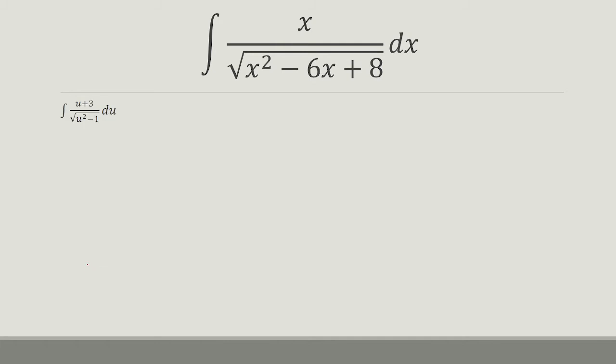Now at this step, we can do a trig substitution. We'll let u equal secant of s. And so du is secant of s times tangent of s ds. Plug that in.